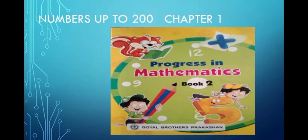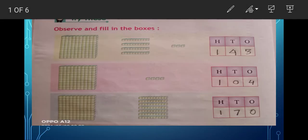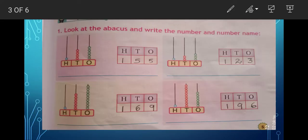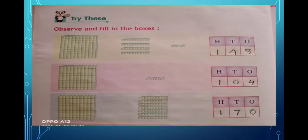Today we will do from page number four. All of you take out page number four and take your pencil and eraser as well. The question is 'Try This' from page number four — observe and fill in the boxes.